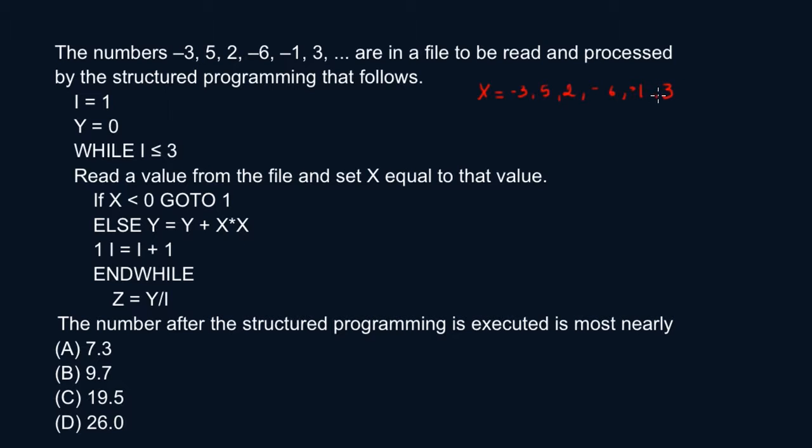Your initial value for I is one. First of all, the question is asking you for the final value of Z. So I is equal to one and Y is equal to zero. While I is less than or equal to three, your options for I are one, two, or three. Read a value from the file and set that to X. If X is less than zero, go to one.